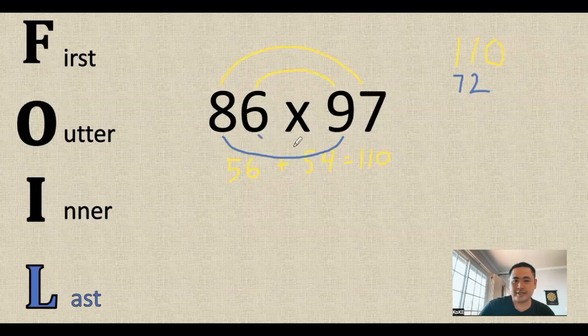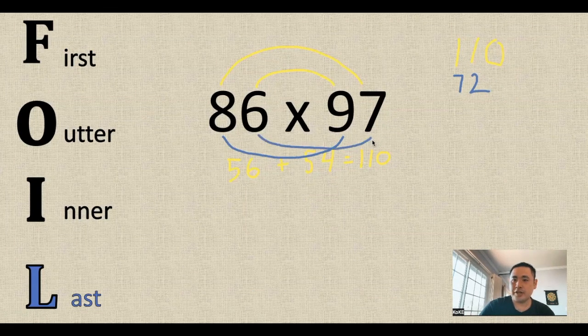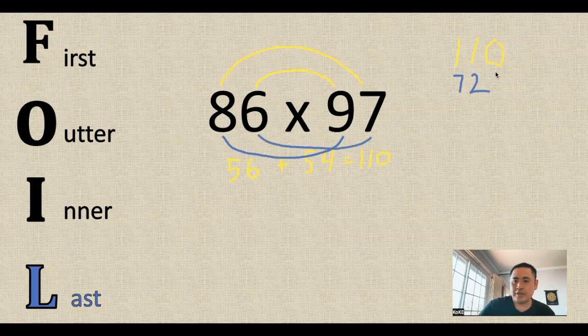And for the last, the 6 and the 7 is going to give us 42. So here, we're going to start that below the 0 and sort of shift it to the right.